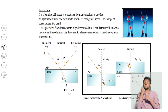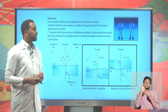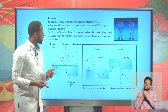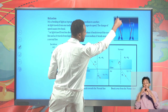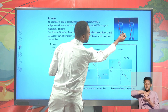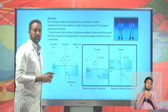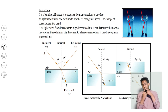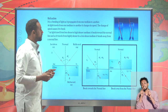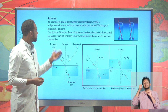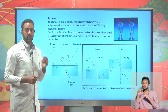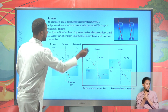Refraction is the bending of light as it travels from one medium to another due to the change of speed. For example, a straw in a glass appears broken because the light — which carries information to our eyes — bends. This bending is known as refraction. Light refracts as it propagates from one medium to another due to the change in its speed.